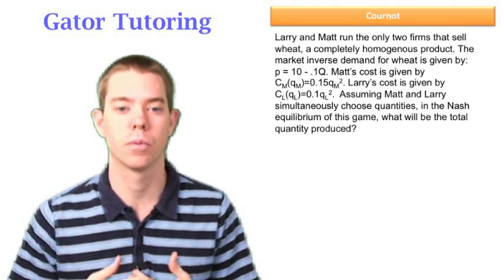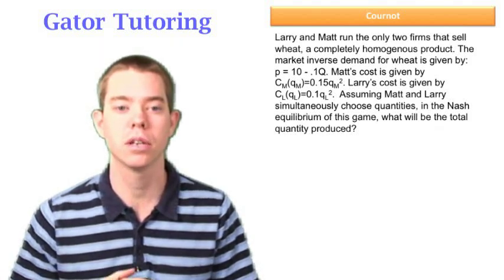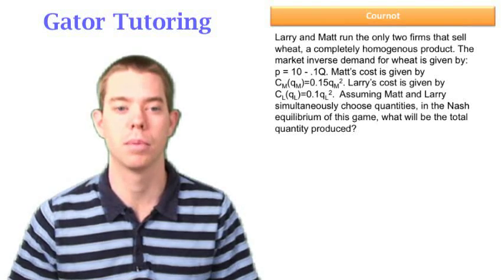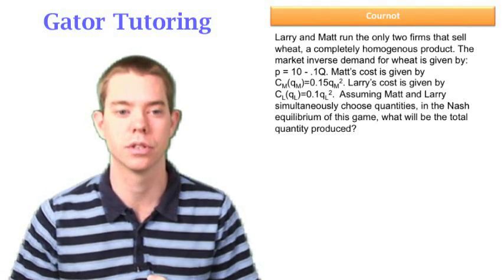It says the market inverse demand for wheat is given by P equals 10 minus 0.1 big Q where big Q is industry quantity. So big Q is equal to how much Larry produces and how much Matt produces. It then goes on to give us each guy's cost function.